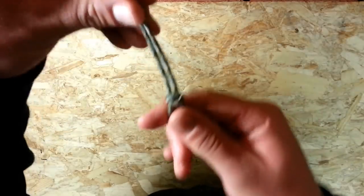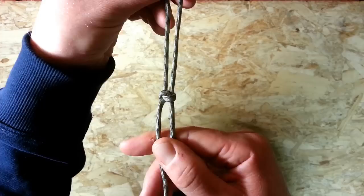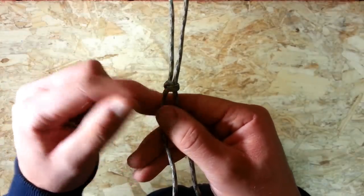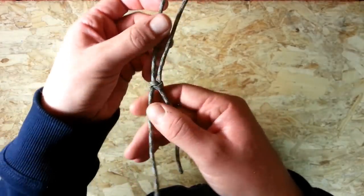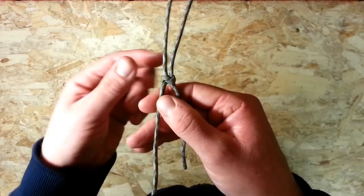And there you have the snake knot and you can see how one coils down through the other. Flip it over, exactly the same in reverse, one coiling down through the other.